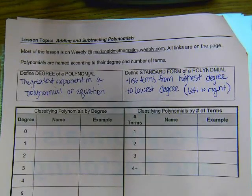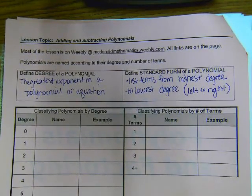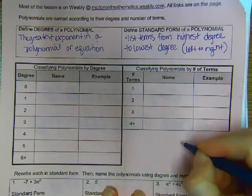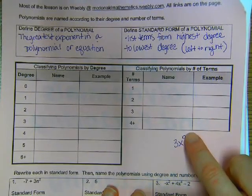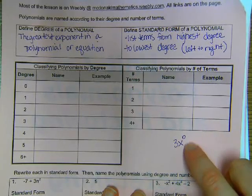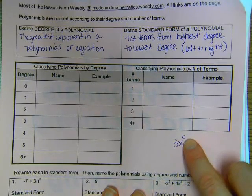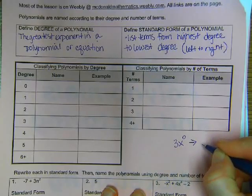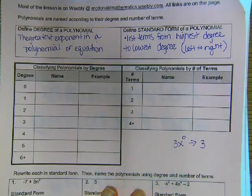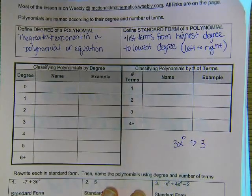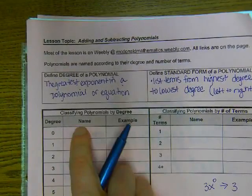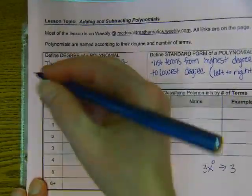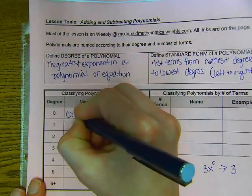If I were to tell you something had degree zero, I'm going to write a little work down here. If I said like 3x to the zero, what did we learn about this x to the zero last chapter? That it's one, right? So if x to the zero is one, wouldn't we just rewrite this as three times one or three? So when something has a zero degree, what happens is the variable drops out.